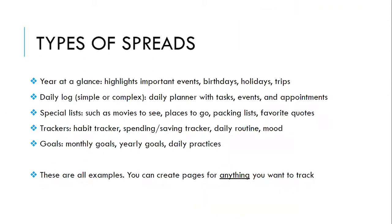Now let's look at the types of spreads. There is year-at-a-glance, which can also represent your future log — it highlights important events, birthdays, anything you know you have coming up through the entire year. A daily log or weekly log has your tasks, events, appointments, etc. There are special lists like books to read and movies to see. Trackers — you can do this with spending and saving too, which I have found very useful. And goals: setting up some goals for yourself, whether monthly, yearly, or even weekly. Your journal is about what you want to accomplish and what you want to see.